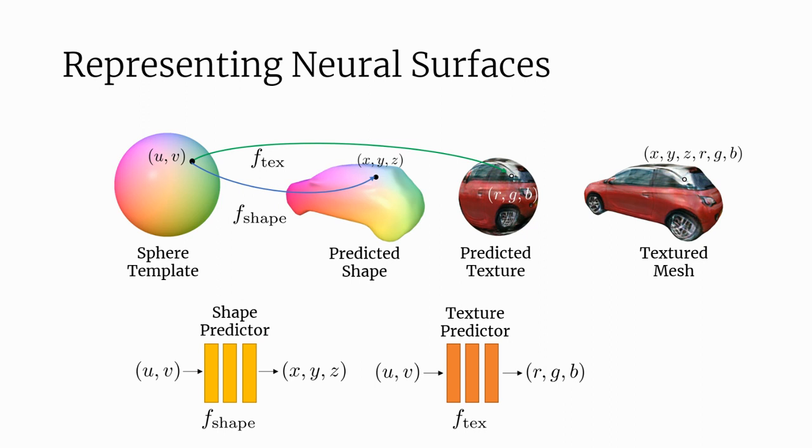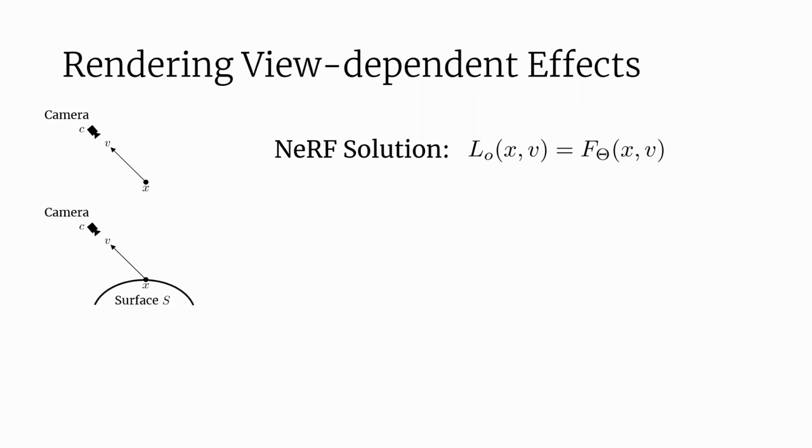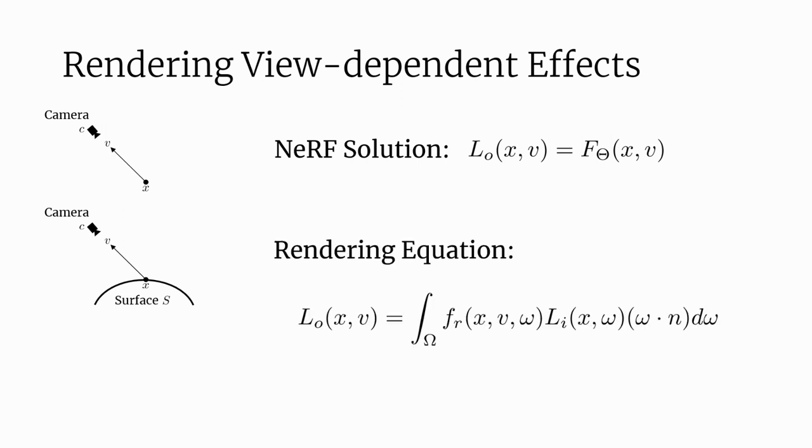However, these components are not sufficient to modeling view-dependent effects conditioned on viewing direction. Suppose we have a camera C looking at point X from direction V. The NeRF solution to computing the radiance of this point is to directly train a neural network. But, if we know that we're rendering a point that actually lies on a surface, then we can use techniques from computer graphics for rendering. In particular, the surface-based rendering equation gives us a way of computing the total radiance at X by integrating over every direction omega over the unit hemisphere centered at the normal.